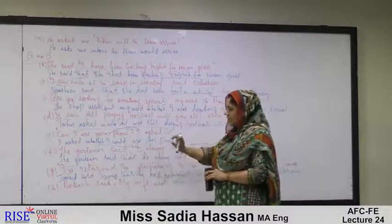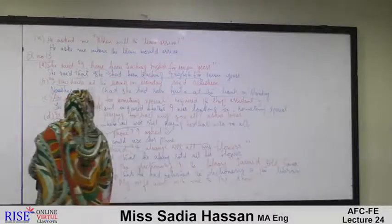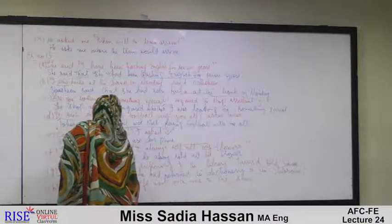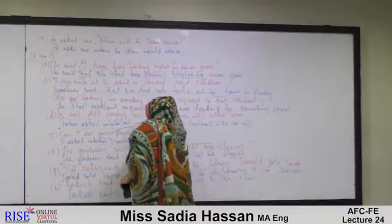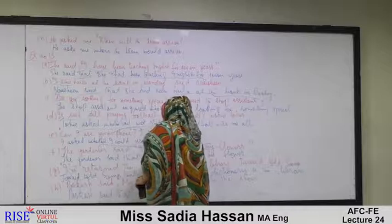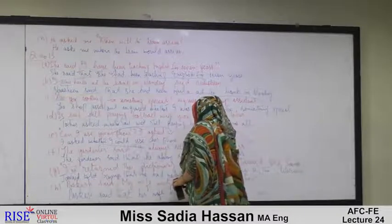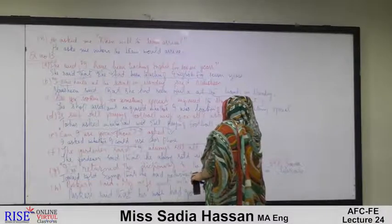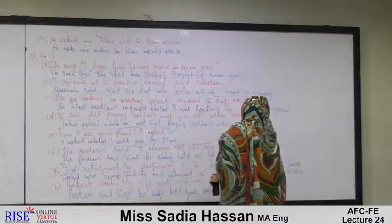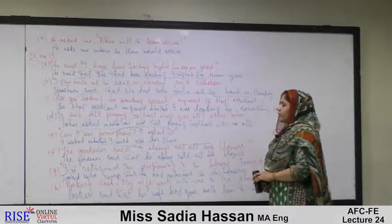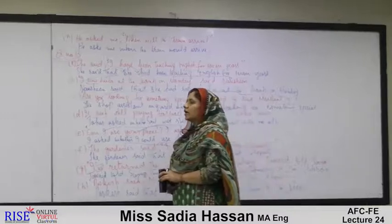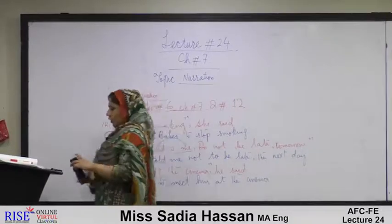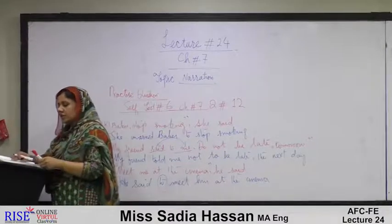Sentence h: Prakash said, 'My wife went with me to the show.' Changed to: Prakash said that his wife had gone with him to the show. 'Went' is simple past and changes to past perfect 'had gone.' 'My' changes to 'his' and 'me' changes to 'him.' This was the practice of self-test number 6 from chapter 7, questions 12 and 13. We are left with two more exercises — questions 14 and 15.